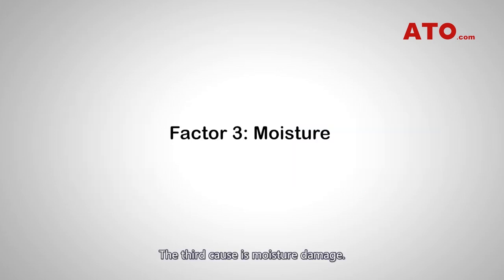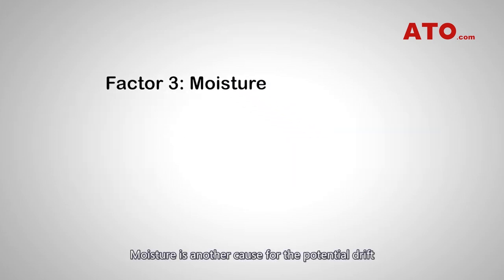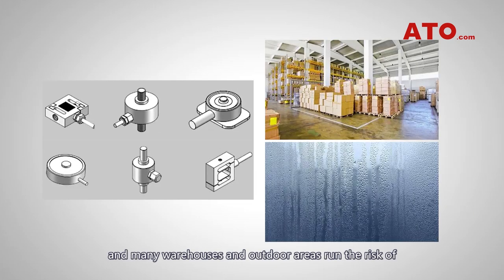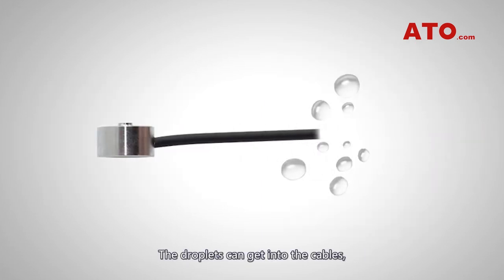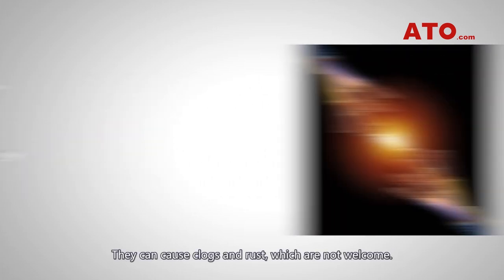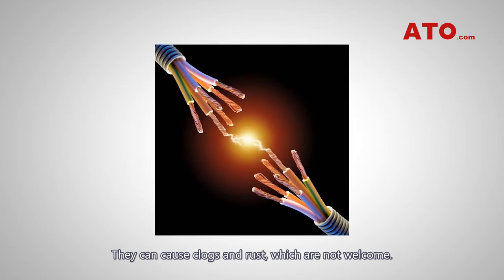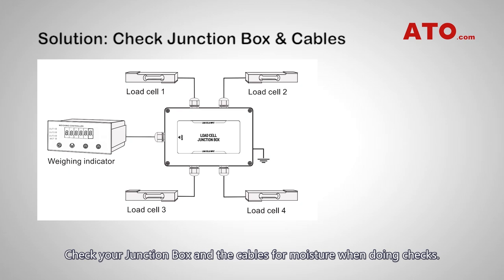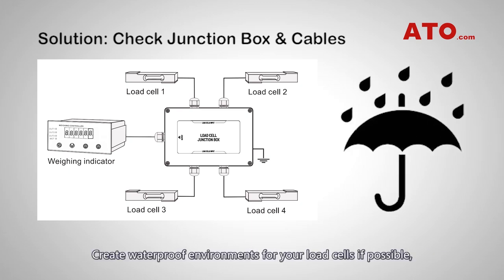The third cause is moisture damage. Moisture is another cause for potential drift, and many warehouses and outdoor areas run the risk of exposing a weighing system to excess droplets and vapour. The droplets can get into the cables, damaging them and the instruments inside the load cell. They can cause clogs and rust. Check your junction box and cables for moisture when doing checks, and create waterproof environments for your load cells if possible, doing what you can to remove potential humidity.